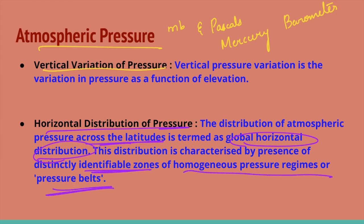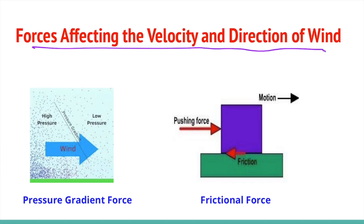Forces affecting the velocity and direction of wind: air in motion due to differences in atmospheric pressure is called wind, which blows from high pressure to low pressure. Wind at the surface experiences friction, and the rotation of the earth also affects wind movement. The force exerted by Earth's rotation is known as the Coriolis force. Horizontal winds near Earth's surface respond to three combined forces: pressure gradient force, frictional force, and Coriolis force.